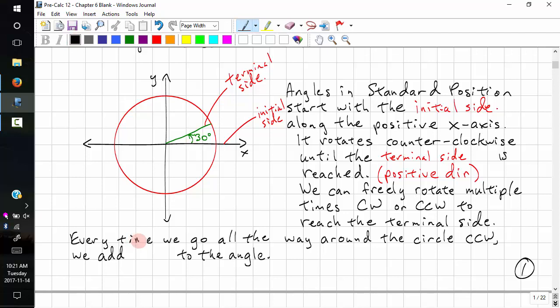Every time we go all the way around in a circle, counterclockwise, we add 360 degrees to the angle. So this would be once around the Ferris wheel.